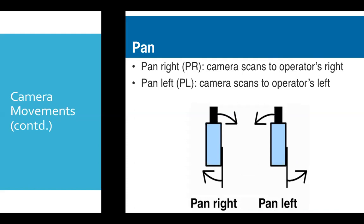It can be on the right side or on the left side. When camera goes to the right side of the operator, that is pan right movement, whereas when camera goes to the left side of the operator, that is pan left movement.